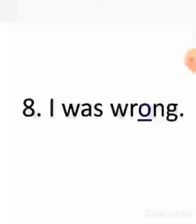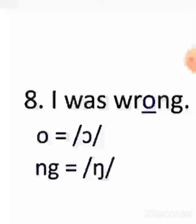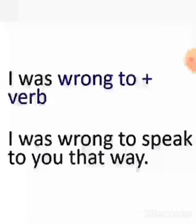Wrong. You will have to pronounce the O sound like 'a' — wrong. I was wrong. The 'a' sound mixes with the -ng nasal sound, so it would be: I was wrong. We can also add a verb: I was wrong to speak to you that way.